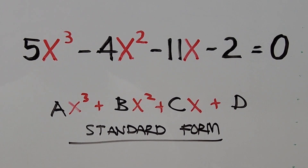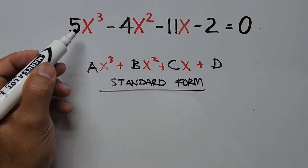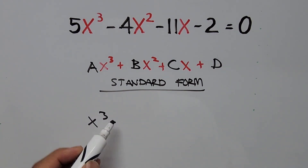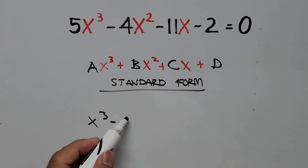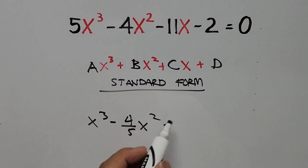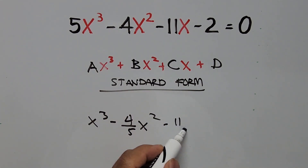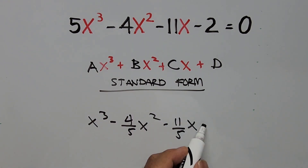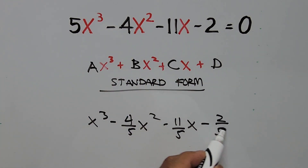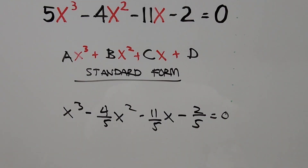all we have to do is first divide the whole equation by 5. So we have x³ divided by 5, that is x³ minus 4/5 x² minus 11/5 x minus 2/5 equals 0.